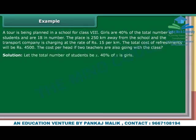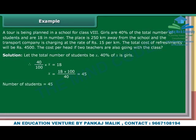Let the total number of students be X. 40% of X are girls. Therefore, 40 upon 100 into X equals 18, so X equals 18 into 100 upon 40, which equals 45. Number of students is equal to 45. Number of boys is equal to 45 minus 18, which is 27.